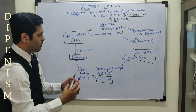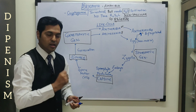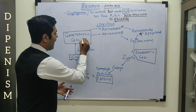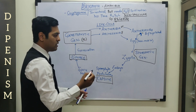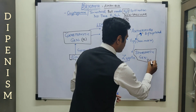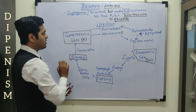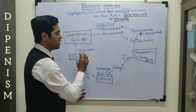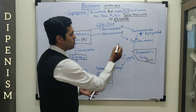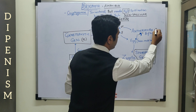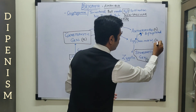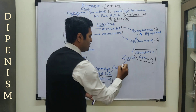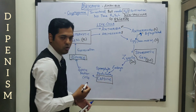Let me explain the ploidy level. Remember students that the gametophytic generation is always haploid, whereas the sporophytic generation is going to be diploid. With the gametophytic generation, the antheridia and archegonia which are produced are again haploid structures. They produce the male gamete — anthrozoids — that is haploid. The egg cell is also haploid. And because of the fusion of the haploid gametes, the zygote that is formed is going to be diploid.